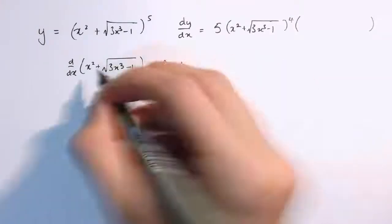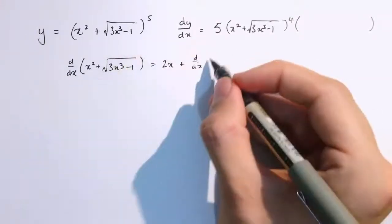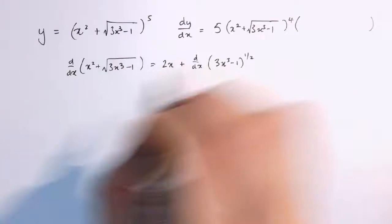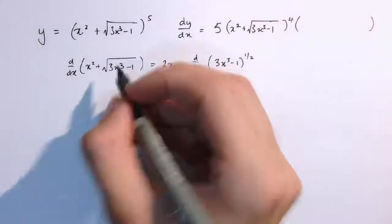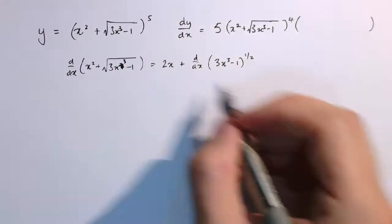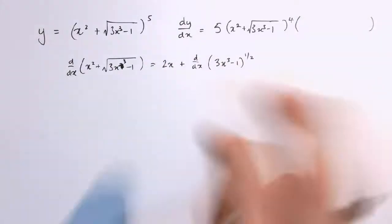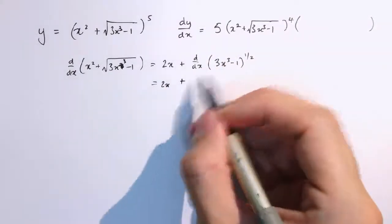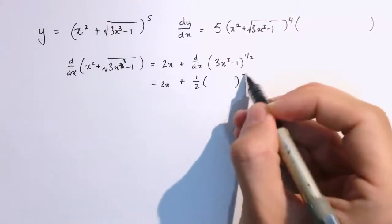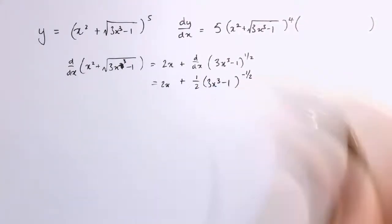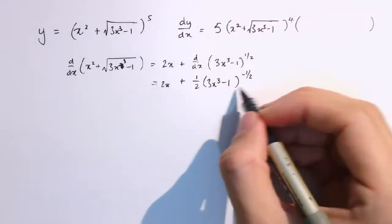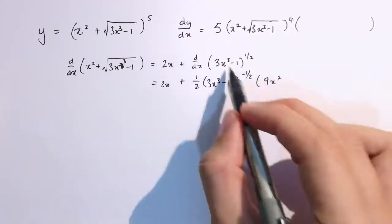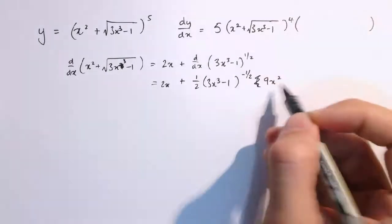That's 2x, and now I need to differentiate the square root part: d by dx of 3x cubed minus 1 to the power 1 half, because power 1 half is the square root. Again, by the chain rule, looking at the outside function — square root of x, or x to the 1 half — that differentiates to 1 half x to the minus 1 half, so that's 3x cubed minus 1 to the minus 1 half. By the chain rule, I multiply by the derivative of the inside function, which gives 9x squared — the minus 1 differentiates to 0, so just 9x squared.